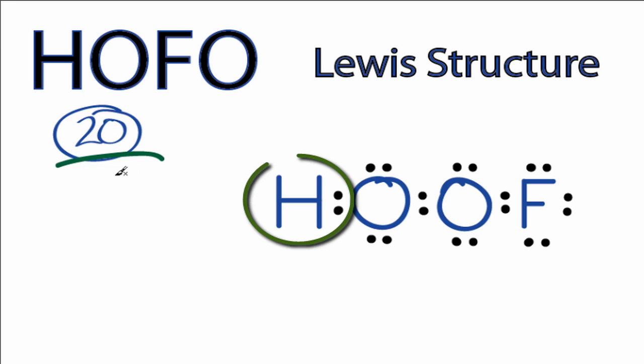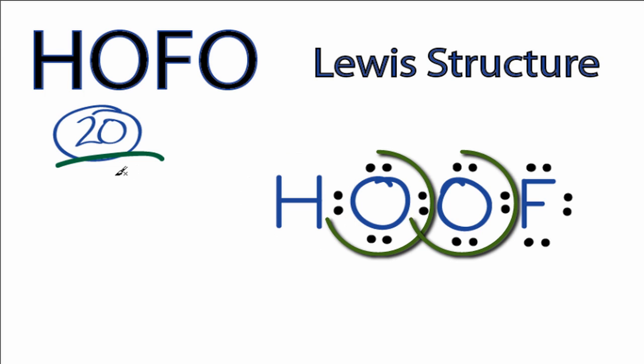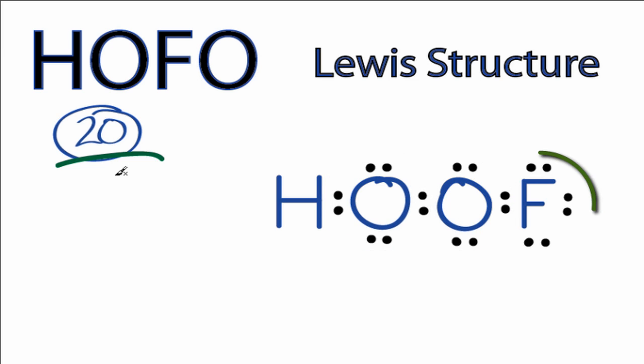Hydrogen has two electrons, so its outer shell is full. Both oxygens have eight valence electrons, so their octets are satisfied, and the fluorine as well — it has eight, so its octet is satisfied.